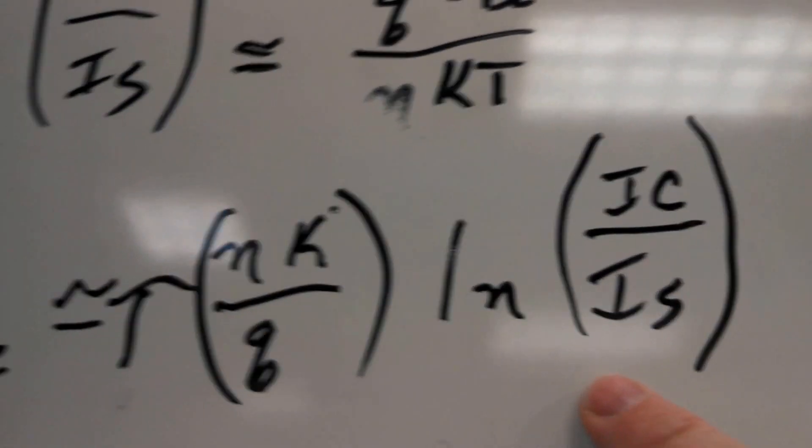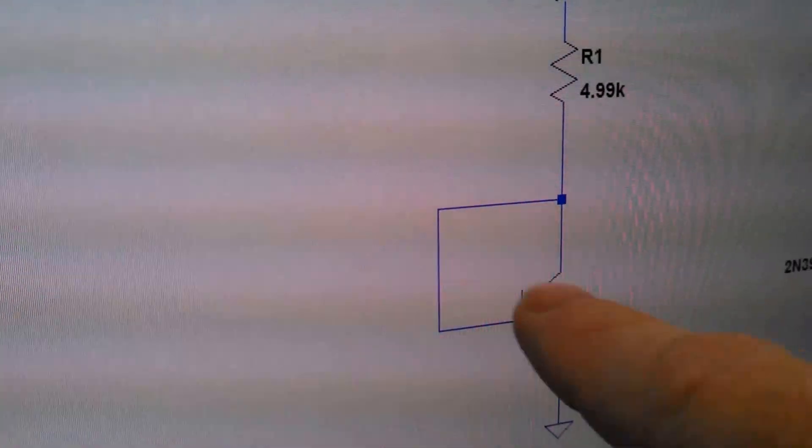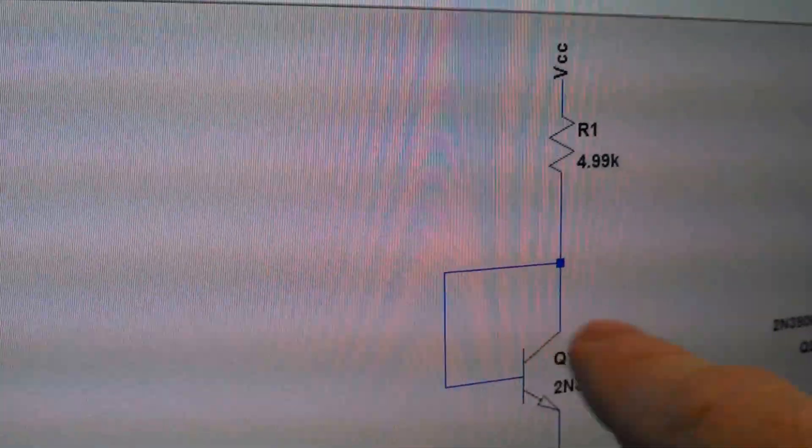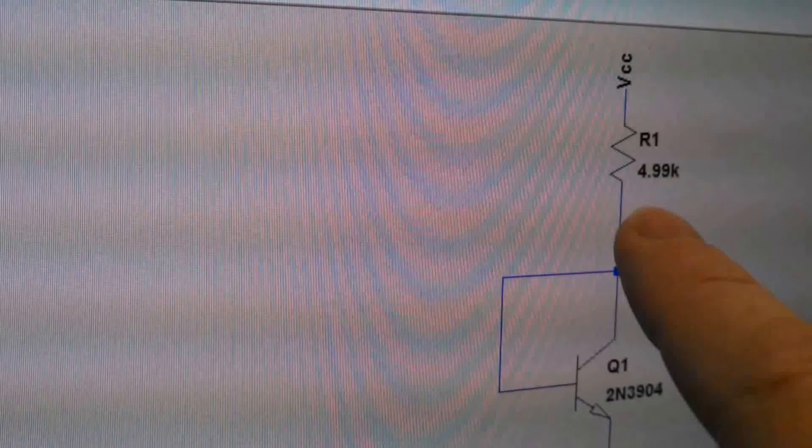And I have, if you see here, a fairly constant current going through. I mean it'll change a little bit, and it becomes an iterative solution to figure out what it, to close in on what it actually is, which is what SPICE is good at.